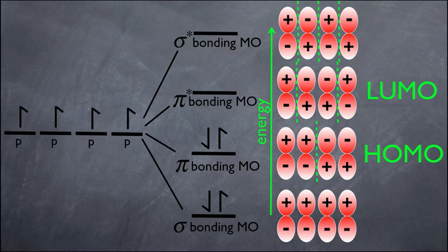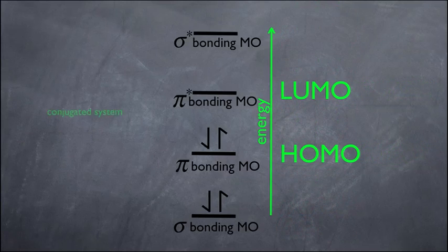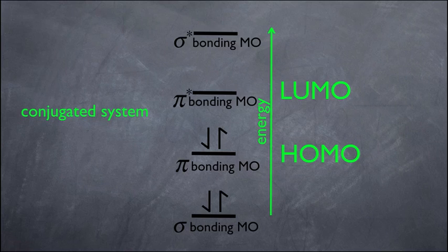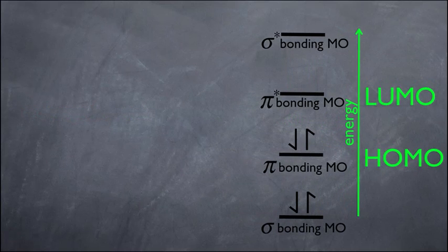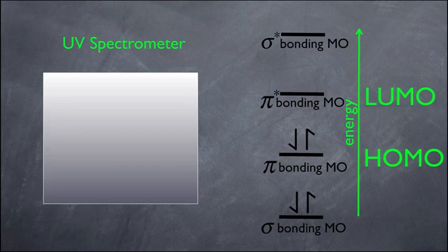This MO diagram becomes yet another way to characterize our conjugated system, and it's what helps us understand how the UV spectrometer works. Remember, for all these machines we need to understand how the machine works and how to read the data. For the UV spectrometer it's harder to understand how it works but easier to read the data. That diagram on the right represents a conjugated system.